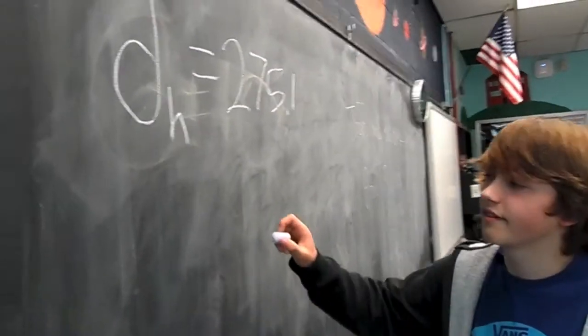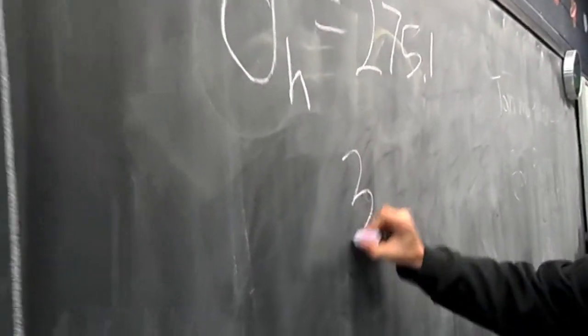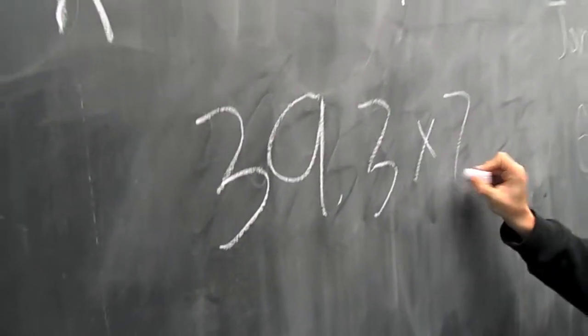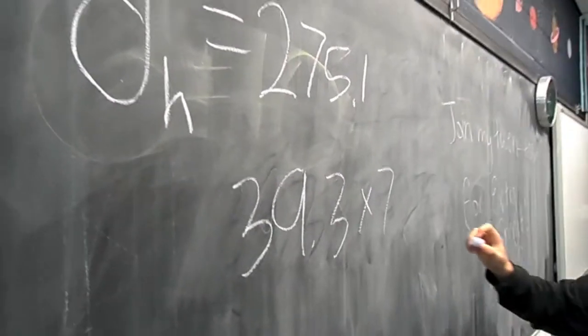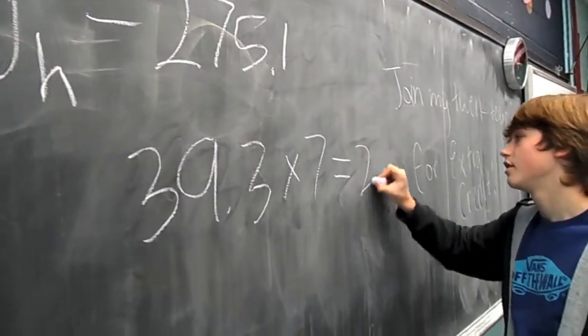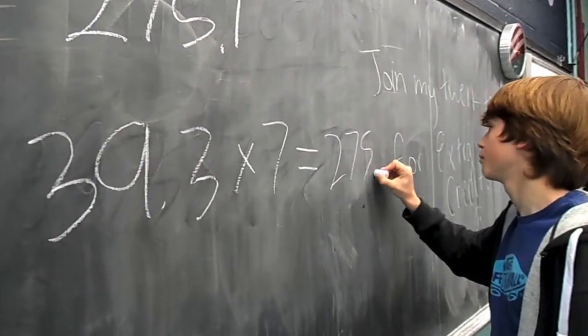Since it's a constant speed, you can just do 39.3 times 7 seconds because that's the time. And that equals 275.1.